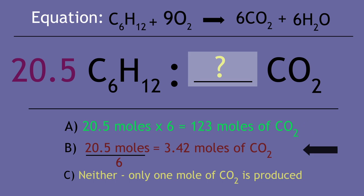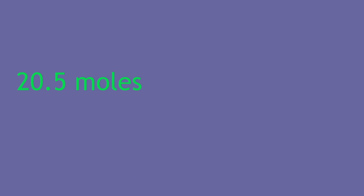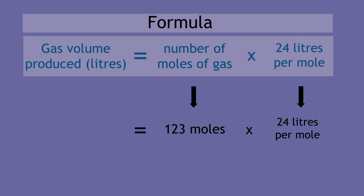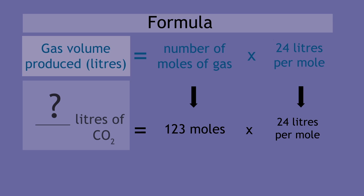Pause, select, and continue when you are ready. The correct answer is A, because 20.5 moles times 6 is equal to 123 moles. Knowing this, you can calculate the gas volume using the formula to work out the volume of carbon dioxide produced.